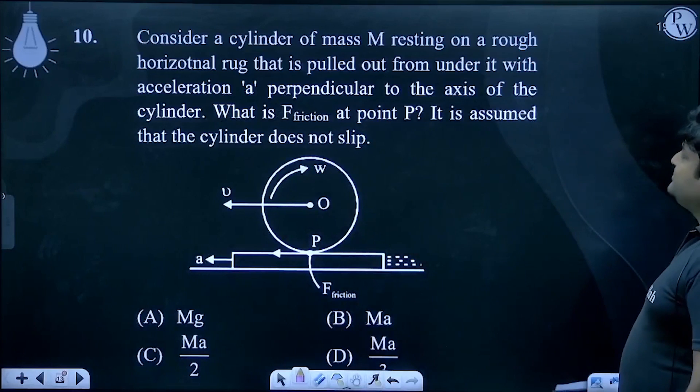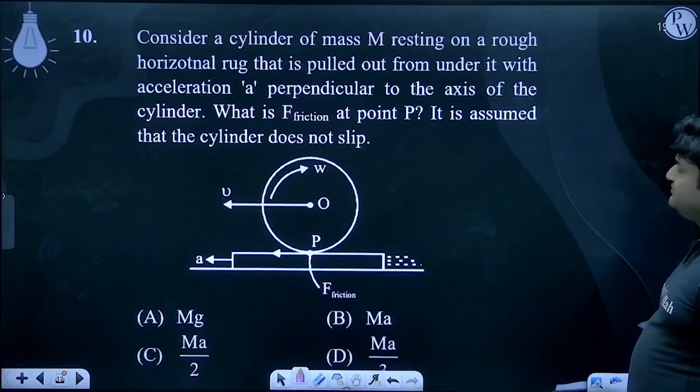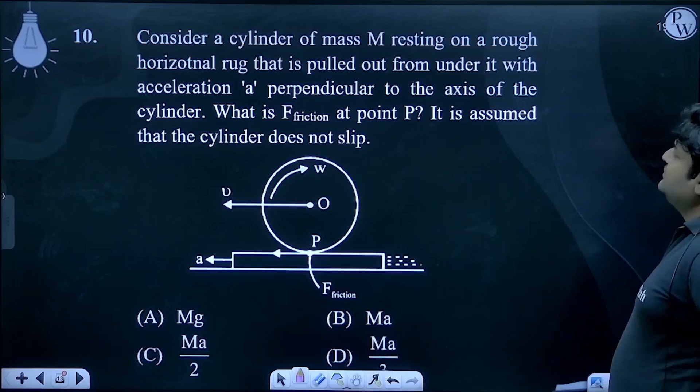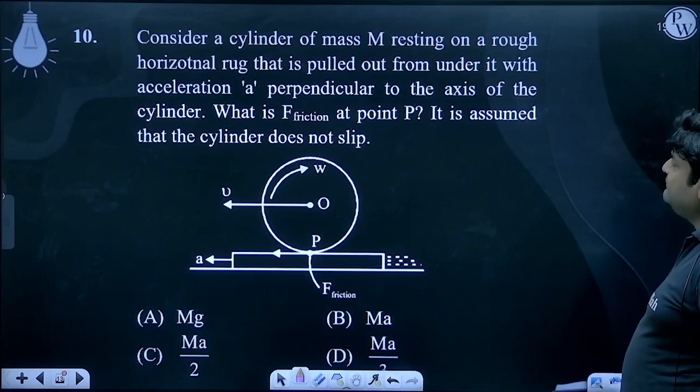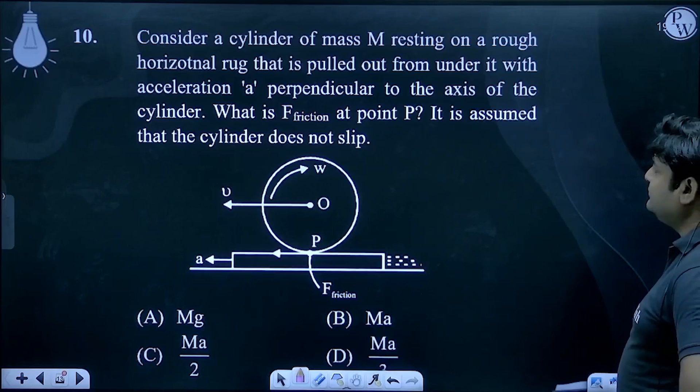Consider a cylinder of mass M resting on a rough horizontal rug that is pulled out from under it with acceleration A perpendicular to the axis of cylinder. What is friction? F friction at point P. It is assumed that the cylinder does not slip.